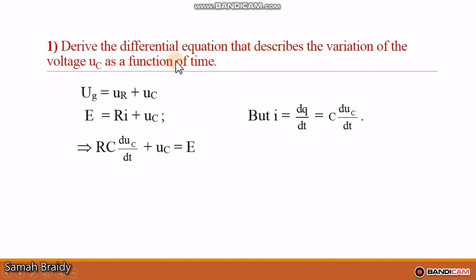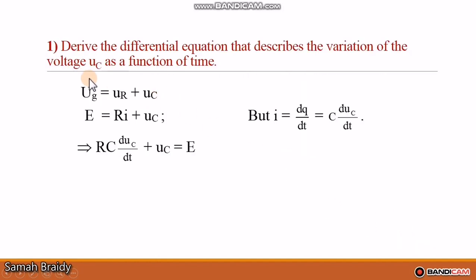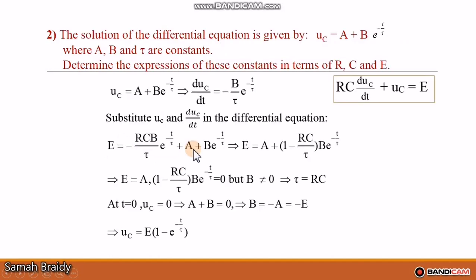Applying Kirchhoff's voltage law: UG equals UR plus UC, where UG equals E. So E equals R·i plus UC. Since i equals dQ/dt and Q equals C·UC, we have i equals C·(dUC/dt). Substituting gives RC·(dUC/dt) plus UC equals E, which is the differential equation describing the variation of UC.